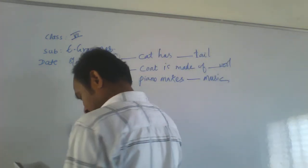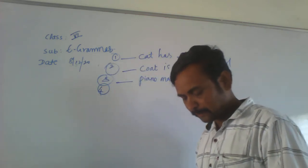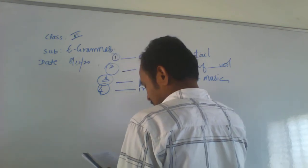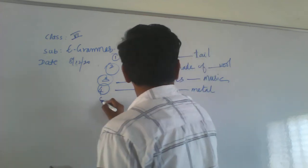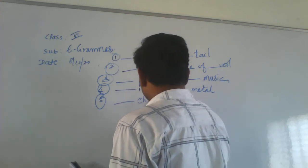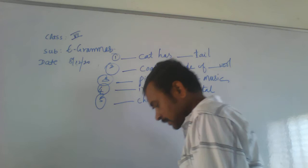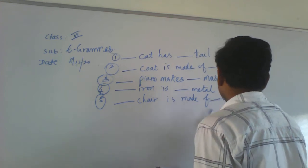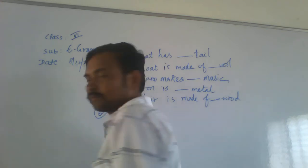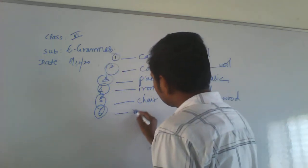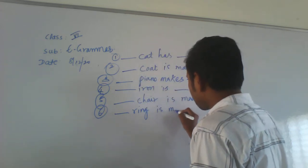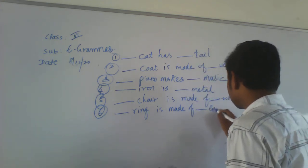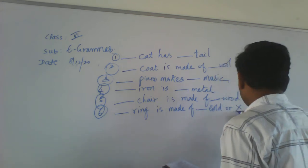That's the fifth one — blank chair — blank wood. Sixth one: a blank ring is made of blank gold or blank silver. Seventh example: blank coffee — blank drink. We can write blank letter on blank paper.